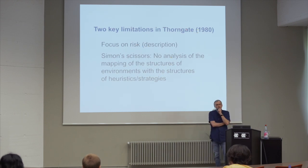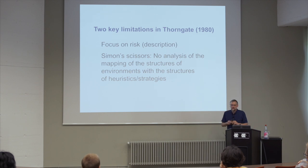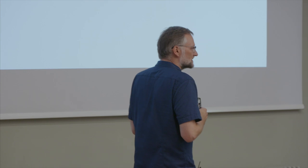There are two weaknesses in Thorngate's analysis. First, it's still the world of risk and decision from description — there's no uncertainty, nothing has to be learned, it's all given to you. The other problem is Thorngate didn't really think much about Simon's scissors — the two blades that work together, the ecological and the cognitive. In other words, he didn't think about under what circumstances a particular choice heuristic works well and when it will falter. He didn't yet have a Brunswickian or Simonian perspective on decision making. However, that changed with another important piece of work in the late 1980s and early 1990s.